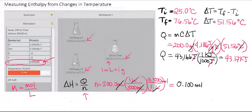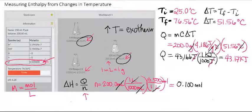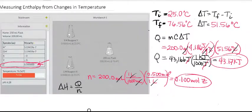So now we can use that to solve for delta H. Now remember that our temperature went from 25 degrees C to 76 degrees C. That means there was an increase in temperature, meaning our reaction is exothermic. That means our delta H value is going to be negative. So now we're ready to calculate our delta H.